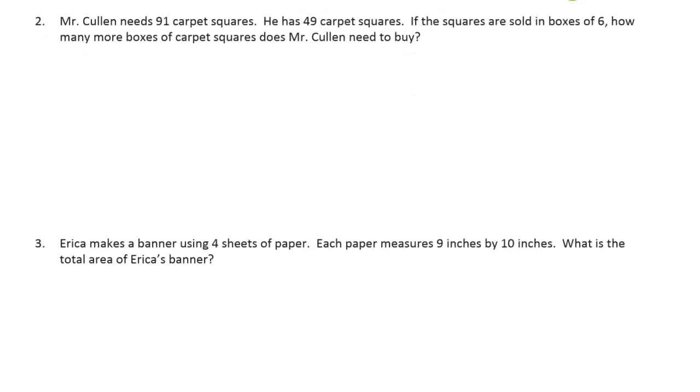Mr. Cullen needs 91 carpet squares. He has 49 carpet squares. If the squares are sold in boxes of six, how many more boxes of carpet squares does Mr. Cullen need to buy? All right. So he needs 91. And he has 49. And we have to figure out, first we have to figure out how many carpet squares he needs. And then figure out how many boxes that's going to take. And hopefully it's going to be a multiple of six. Now that makes a two-step problem. We have to figure out two things.